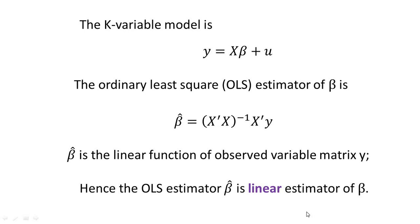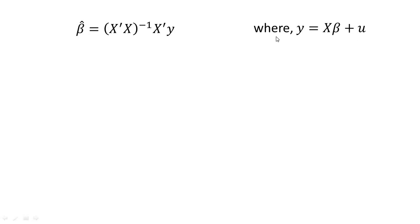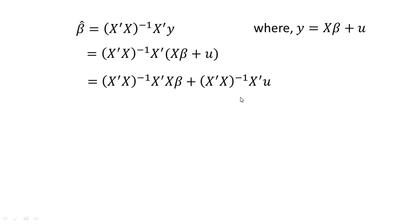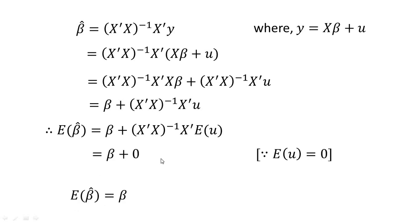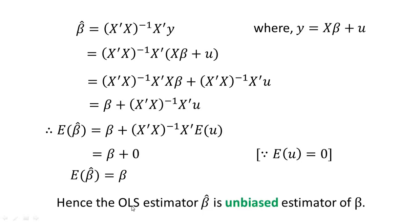We know y = Xβ + u. Substituting in place of y, we write Xβ + u, and after multiplication we get β̂ = β + (X'X)⁻¹X'u. Taking the expected value, since E(u) = 0, we get E(β̂) = β. Hence, the OLS estimator β̂ is an unbiased estimator of β.